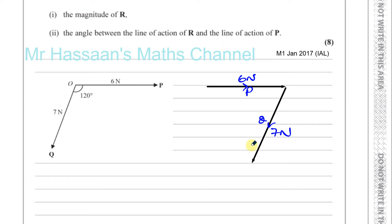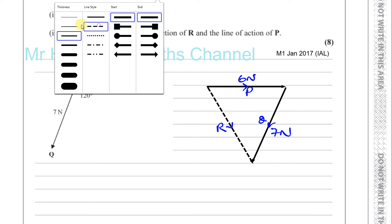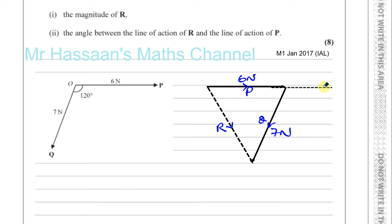R is the resultant, so it will be the vector joining from where we started to where it ends — like a vector diagram. Now we need to find one of these angles in the triangle. If we continue the line of P along, we know that 120 degrees is the angle between the two forces, so this interior angle must be 60 degrees to add up to 180.